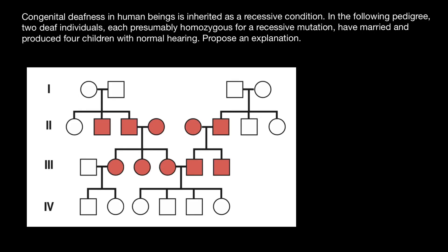Hello and welcome to Nikolai's Genetics Lessons. Today's question is: congenital deafness in human beings is inherited as a recessive condition. In the following pedigree, two deaf individuals, each presumably homozygous for a recessive mutation, have married and produced four children with normal hearing. Propose an explanation.